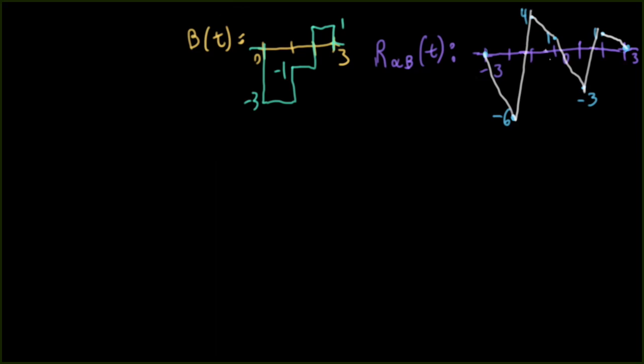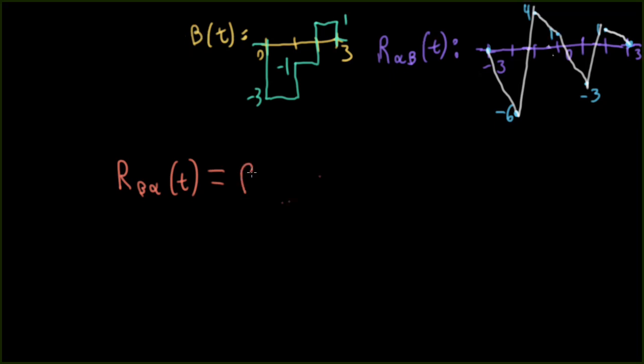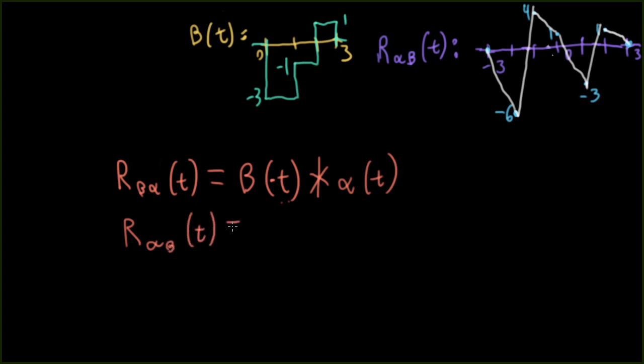So we went to a bunch of work to try to figure out what r alpha beta was. Well, what if I was really interested in r beta alpha? Well, if you already have computed r alpha beta, this isn't very difficult. If we think about what this is in terms of convolution, it's defined as beta minus t convolved with alpha of t. And remember, r alpha beta of t was defined as alpha minus t convolved with beta t. So remembering that convolution is commutative, we see that if I were to just negate all the t's in here, I would get the same thing. So r beta alpha is equal to r alpha beta minus t. So r beta alpha would just be this function mirror flipped around zero.